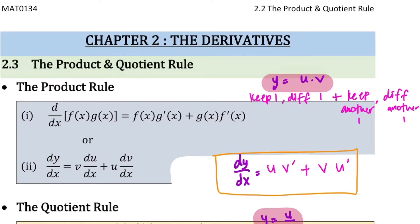So the rhythm here is: you need to keep one (u), differentiate one (v'), plus keep another one (v), differentiate another one (u').